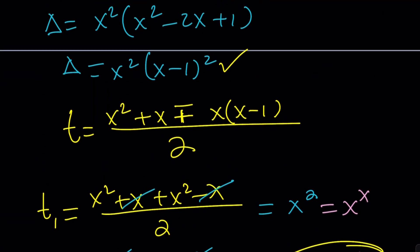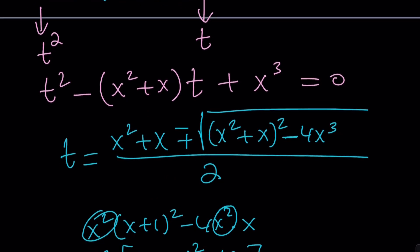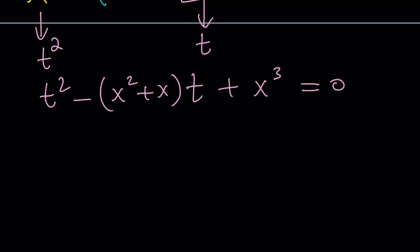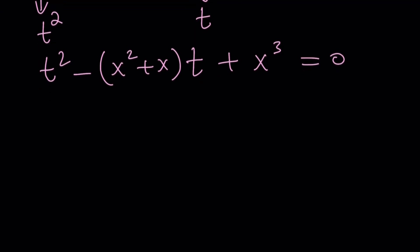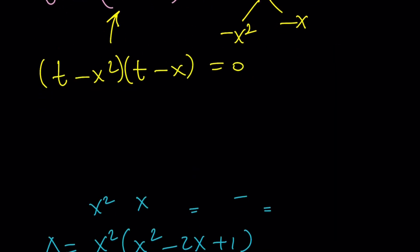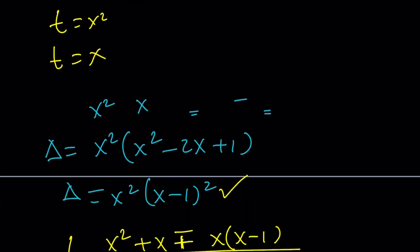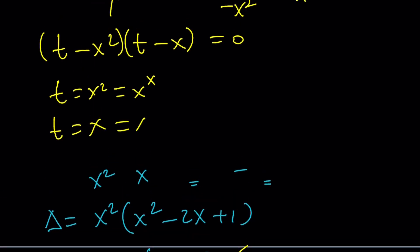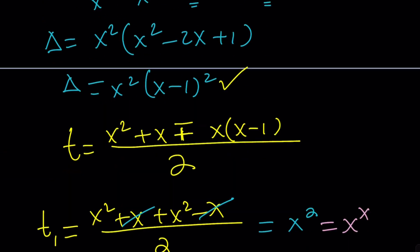You could also use factoring to solve this problem if you did not want to go with the quadratic formula. Obviously, the quadratic formula is safer in most cases. We've got to find two numbers whose product is x cubed and whose sum is the opposite of negative x squared, the opposite of x squared plus x. And those factors you're looking for are negative x squared and negative x. Notice that their sum is this, and their product is that. So we can basically factor this as t minus x squared and t minus x equals 0, which gives us t equals x squared and t equals x as before. And then you can replace t with x to the x and get the same solutions.